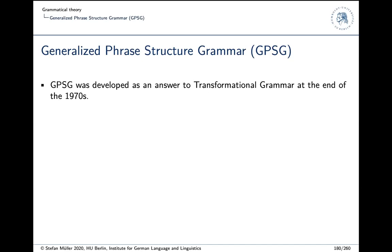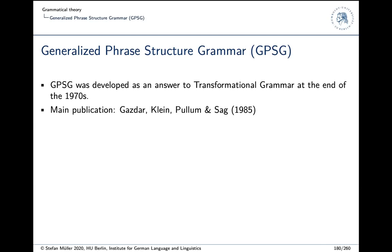GPSG was developed as an answer to transformational grammar at the end of the 70s. The main publication is Gazdar, Klein, Pullum, and Sag — a book about GPSG grammar for English. It appeared in 1985, at which point GPSG was largely over, mainly because of some formal properties of languages.